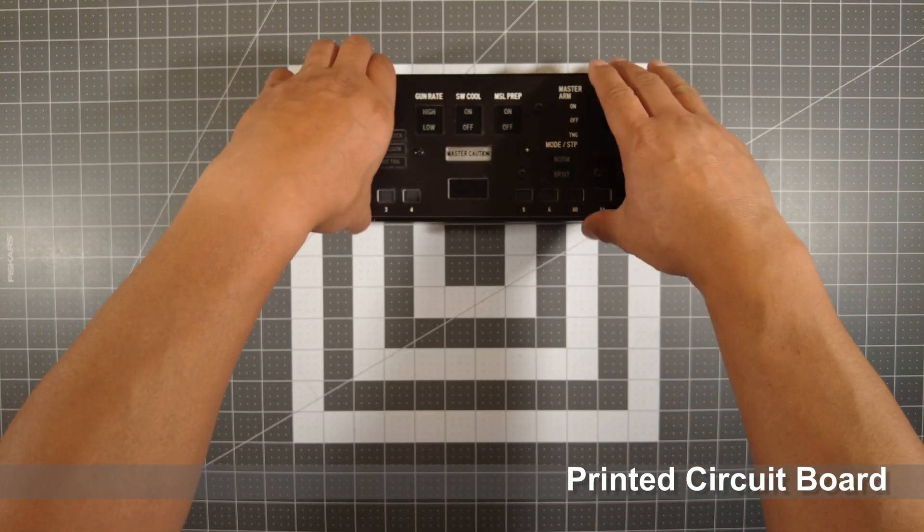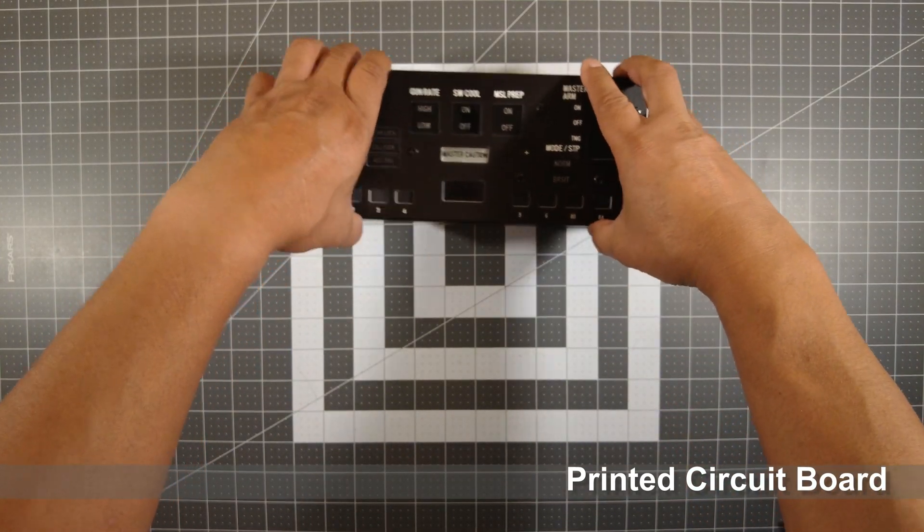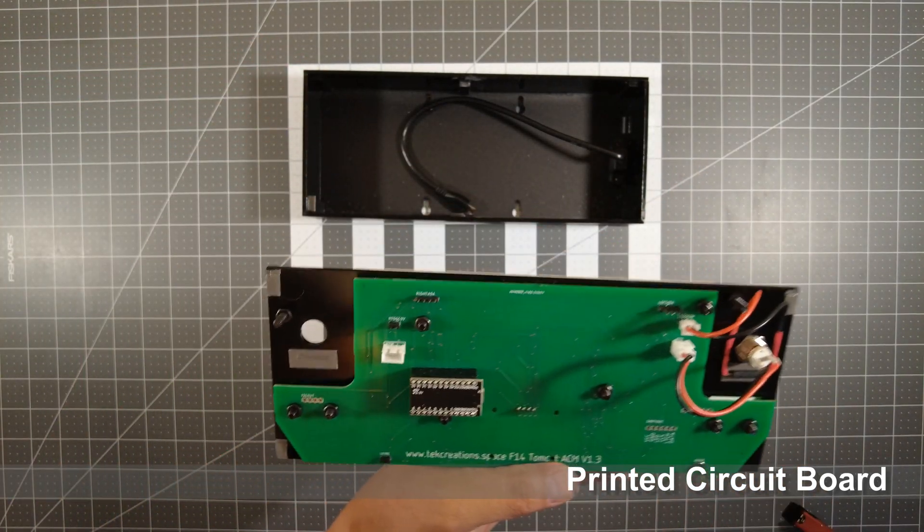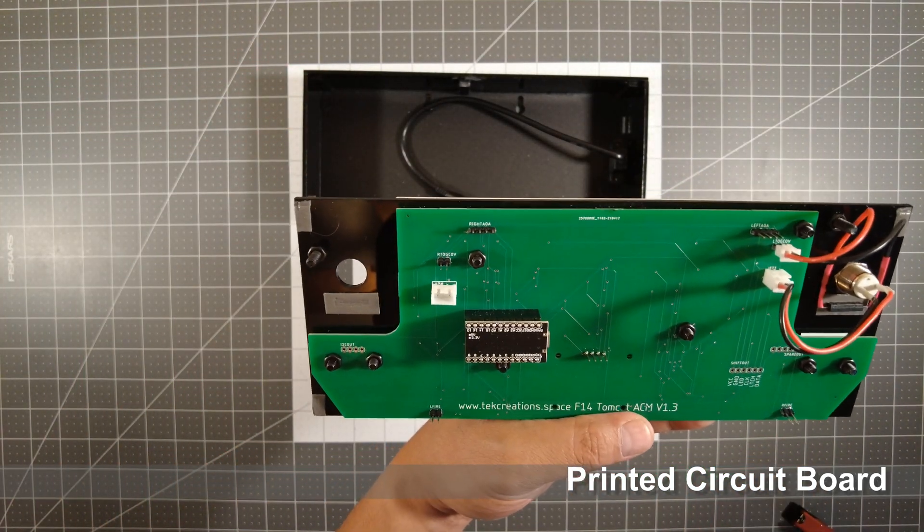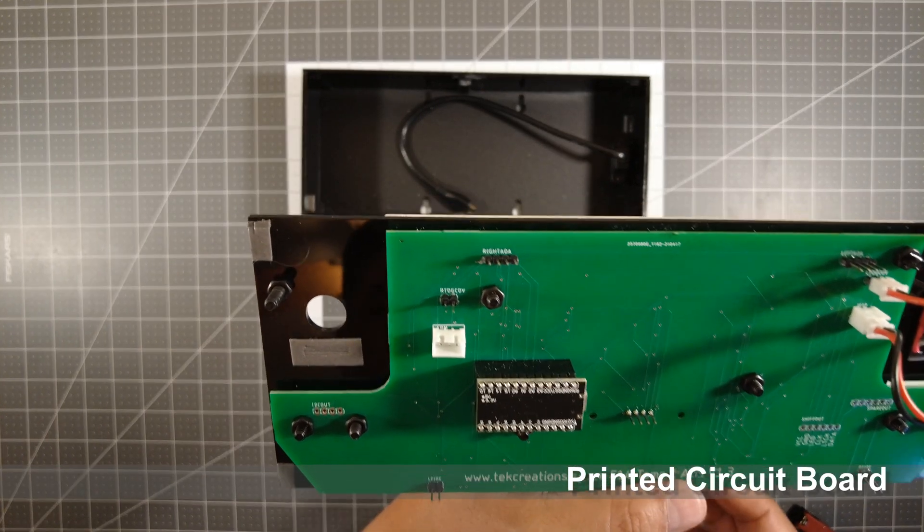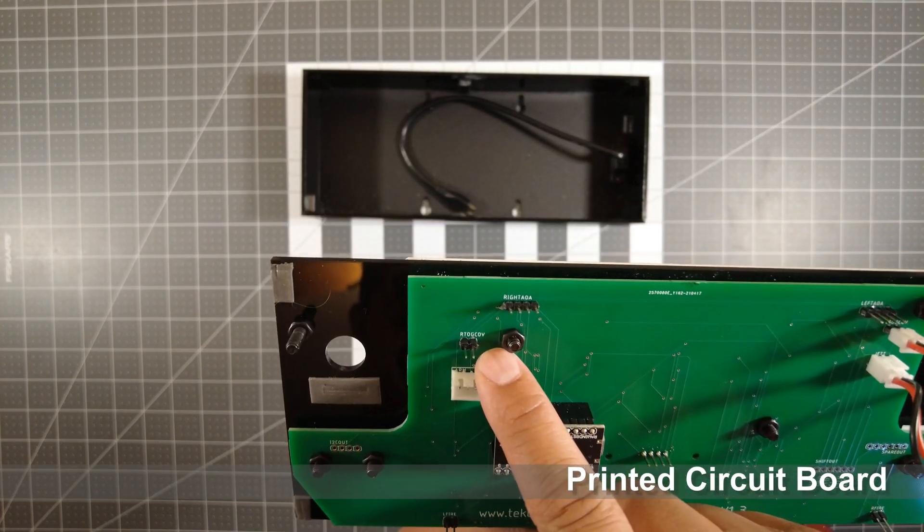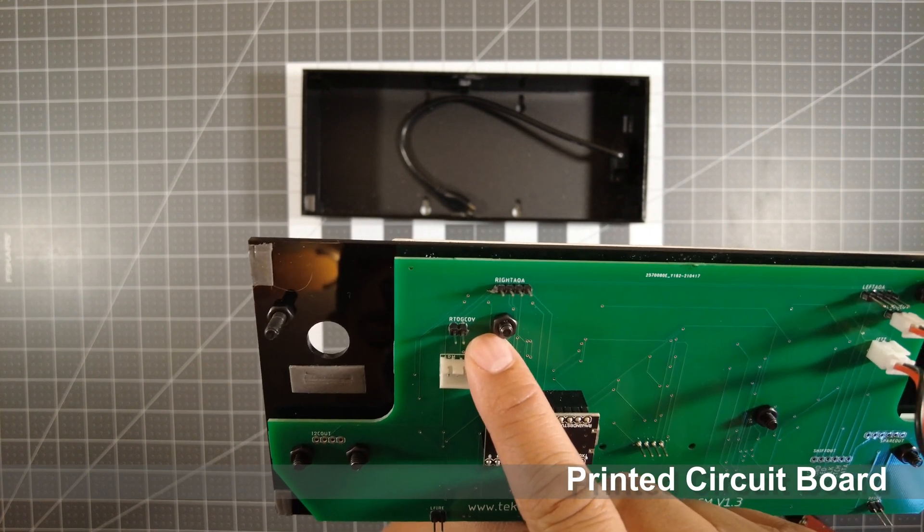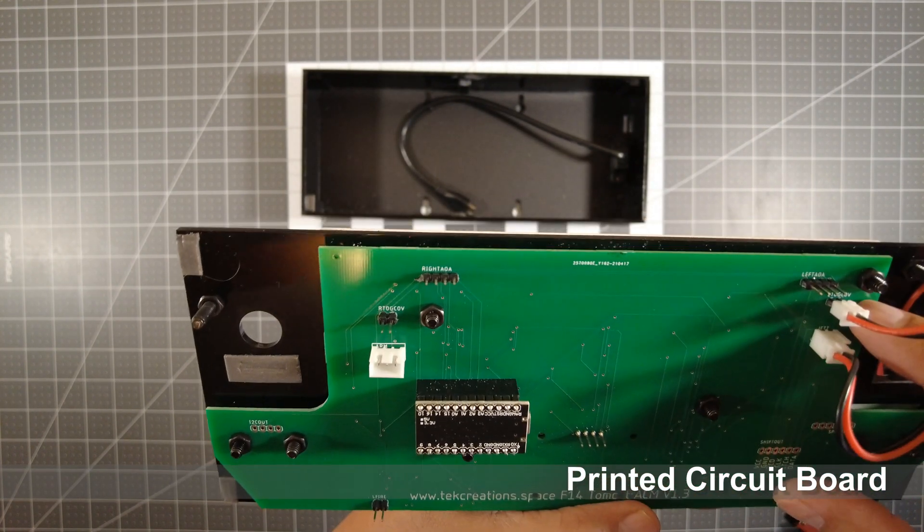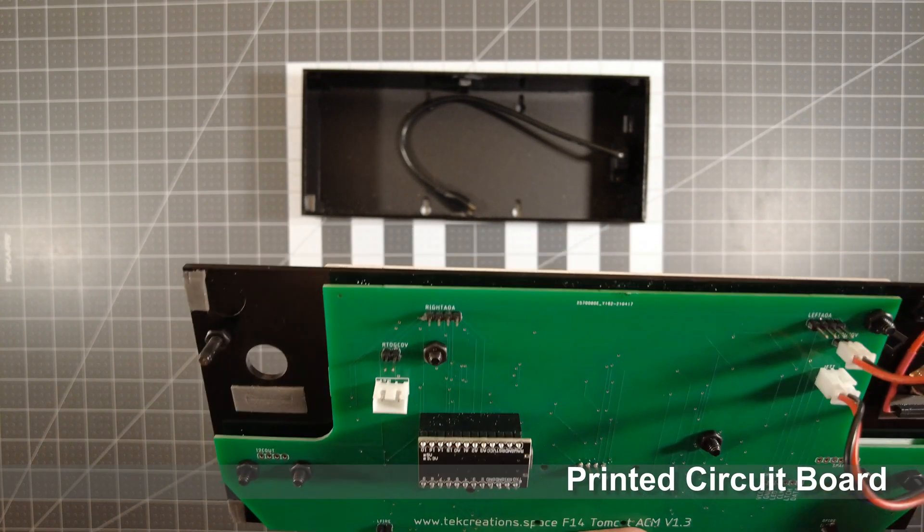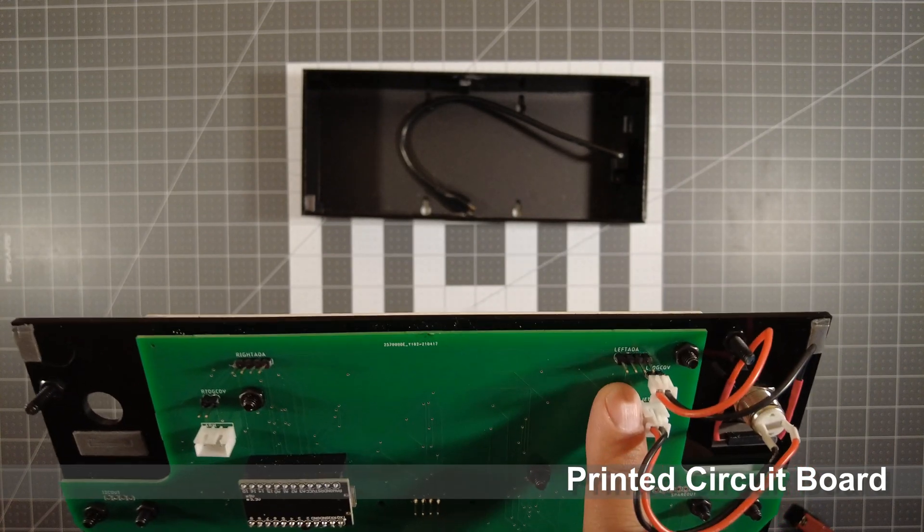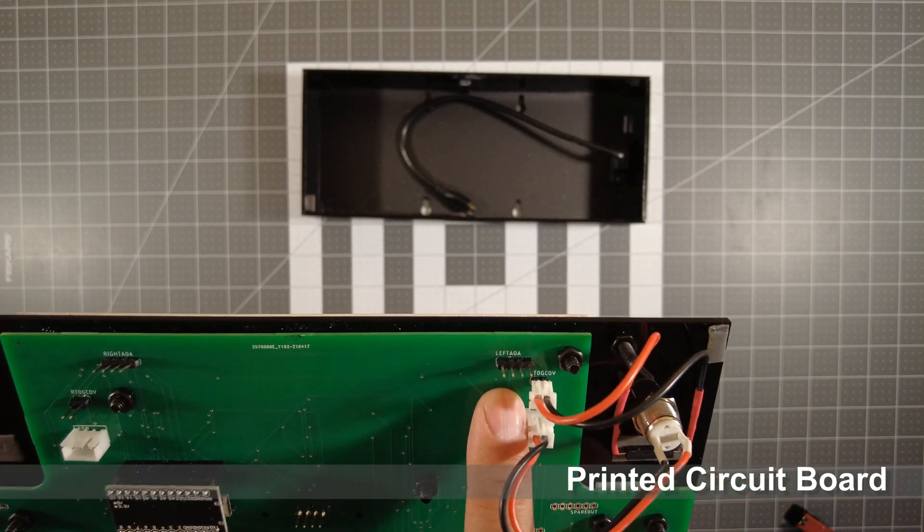Let's take a look at the ACM panel. Just remove the top part - it's just press fit. Let's look at the PCB. Tech Creations put the ability to actually use the switches. They're labeled right toggle cover and left toggle cover.